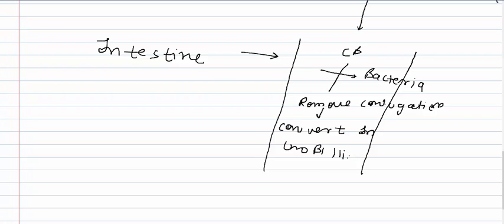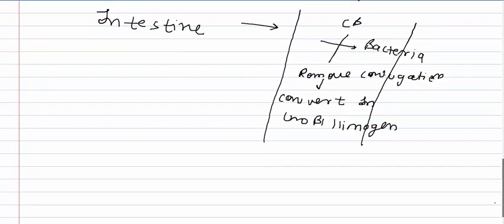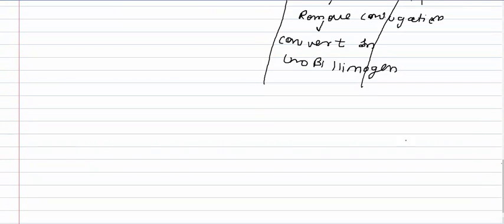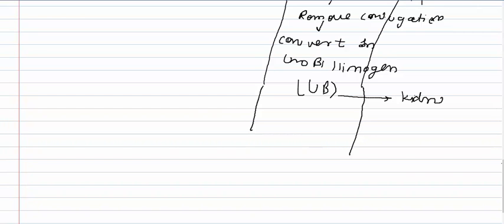Urobilinogen is a water-soluble component, so it can be excreted by the kidney. It is important to note that only urobilinogen is present in the blood — never unconjugated bilirubin. Here is the excretion of urobilinogen by the kidney.